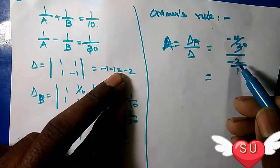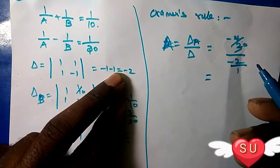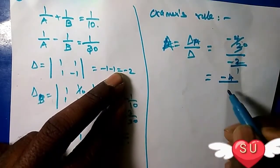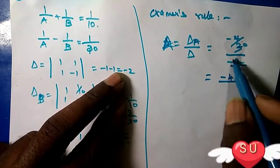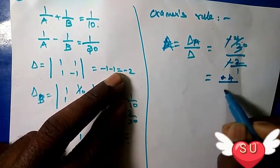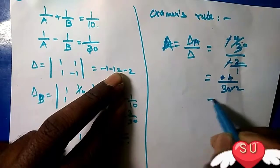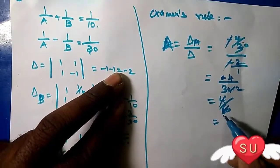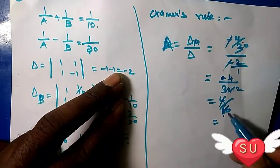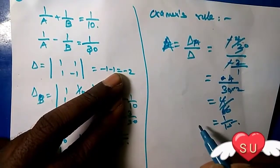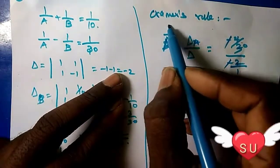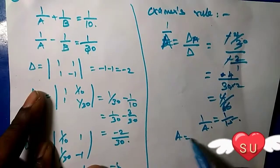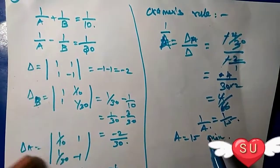So -4/30 divided by -2. Minus times minus cancel, giving us 4 divided by 30 times 2, which is 4/60. Cancel that: 1/15. Therefore, 1/A equals 1/15, so A equals 15 minutes.